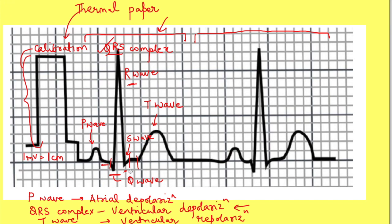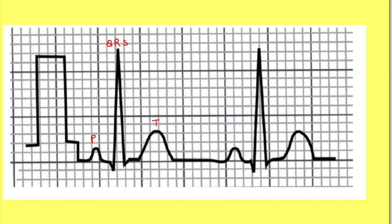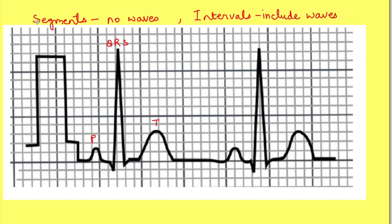Now let us see various intervals and segments. Segments do not have any waves between them, but intervals include waves. We will talk about three segments and five intervals. The segments are PR segment, ST segment, and TP segment. PR segment is from the end of the P wave to the beginning of the QRS complex — even though it is called PR segment, it is marked till the beginning of the QRS complex.